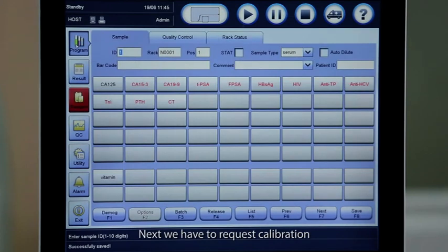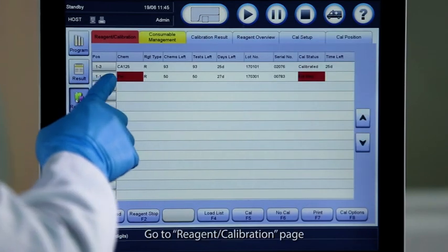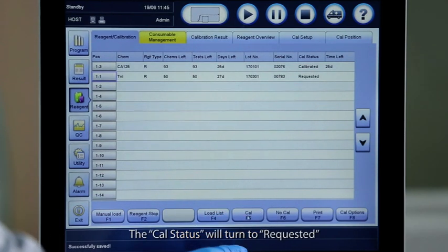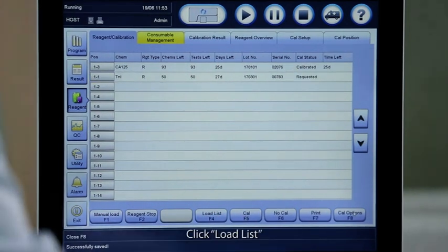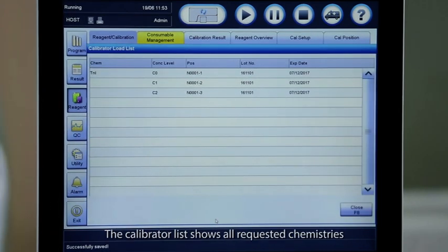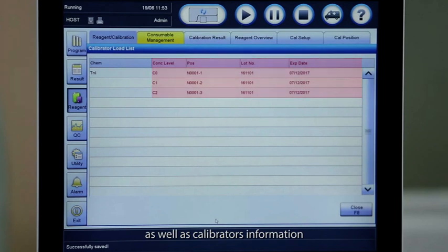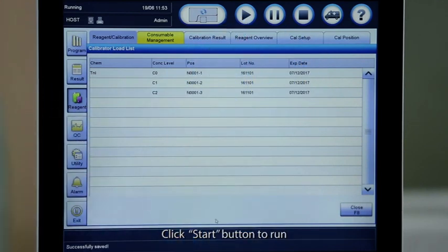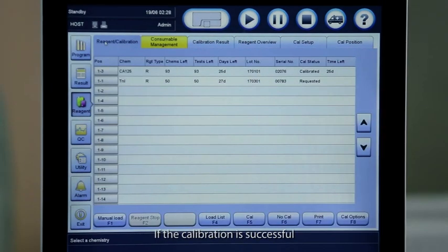Next we have to request calibration. Go to Reagent Calibration page. Select the chemistry that needs calibration. Select Cal. The cal status will turn to Requested. Click Load List. The calibrator list shows all requested chemistries as well as calibrators information. Load calibrators according to the calibrator list. Click Start button to run. If the calibration is successful, the status will change to Calibrated.